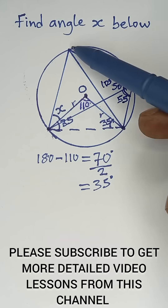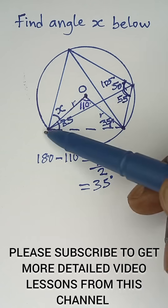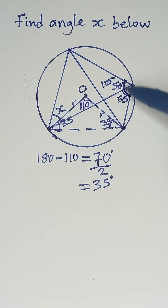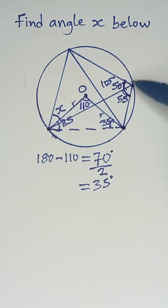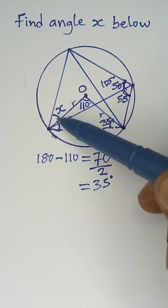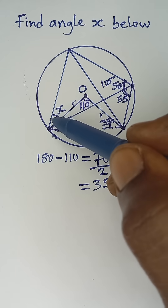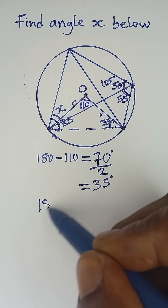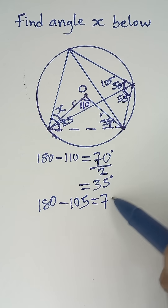Now looking at this cyclic quadrilateral — a quadrilateral with all its vertices on the circle — the opposite angles of a cyclic quadrilateral are supplementary. So 105° plus the whole of this opposite angle should give us 180°, meaning this angle is 180° minus 105°, which gives us 75°.